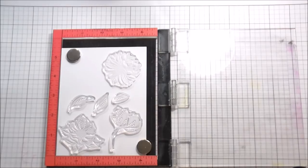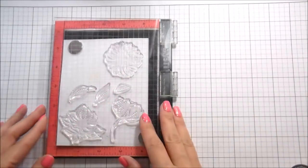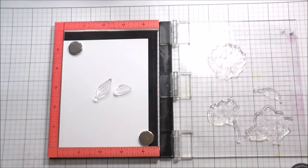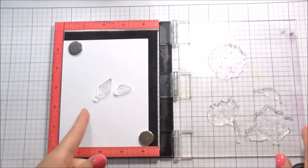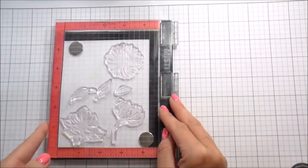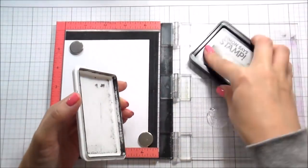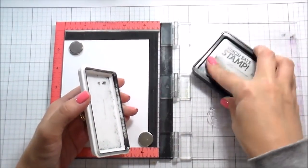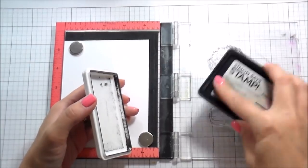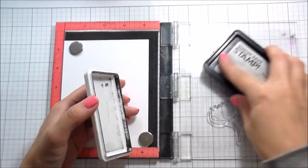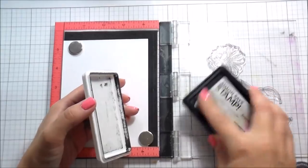I'm working on Neenah 80 pound Solar White cardstock here and I'm just going to stamp out all of my floral images. I wasn't paying attention to the fact that my leaves didn't pick up the first time around. I'm stamping in Intense Black ink from Simon Says Stamp because it is Copic safe.